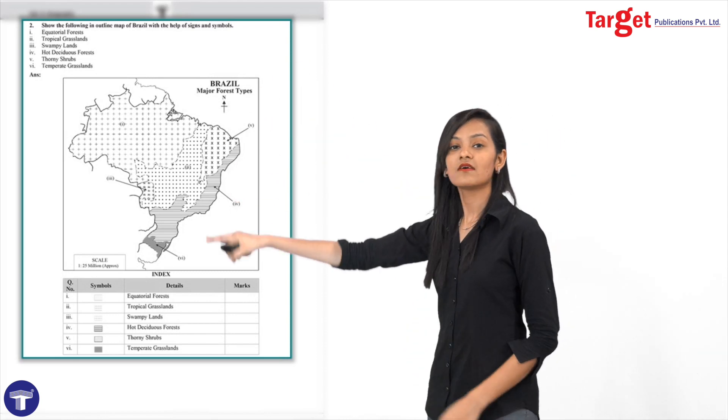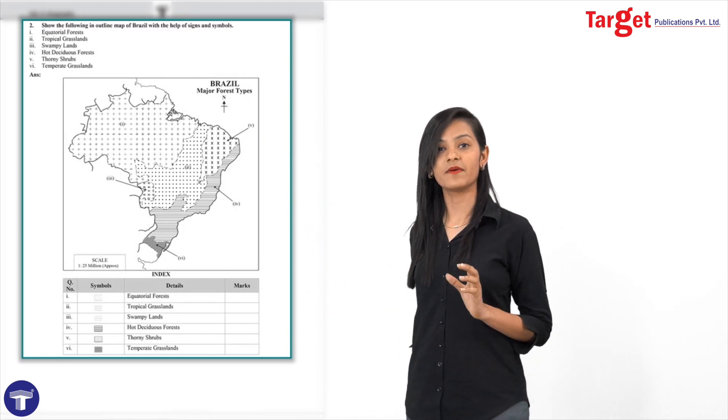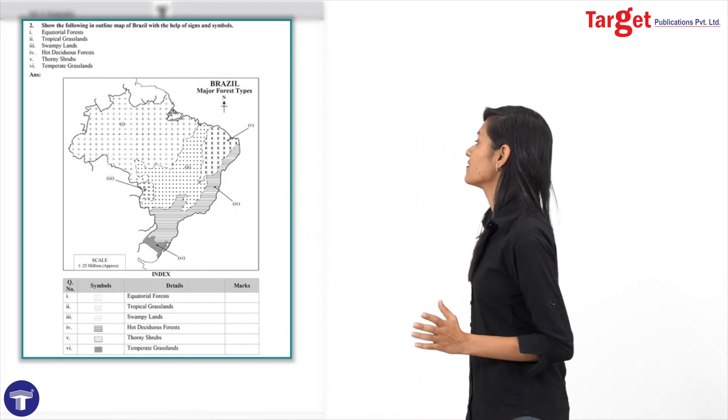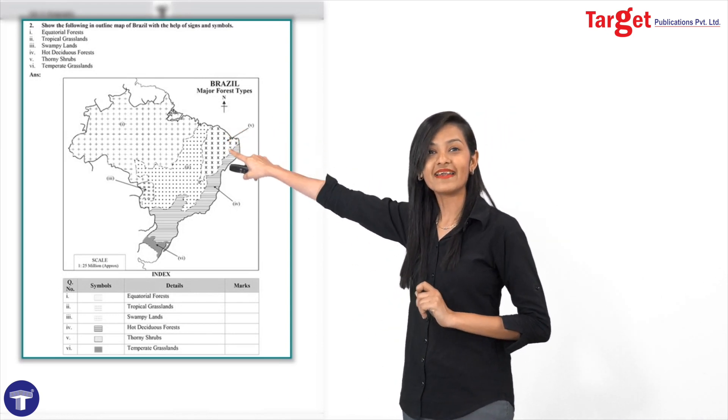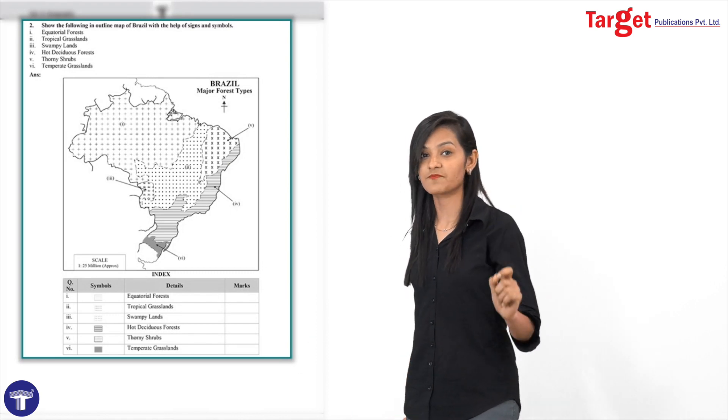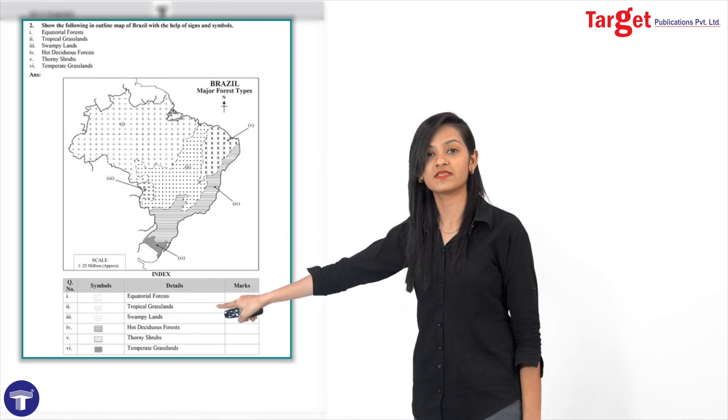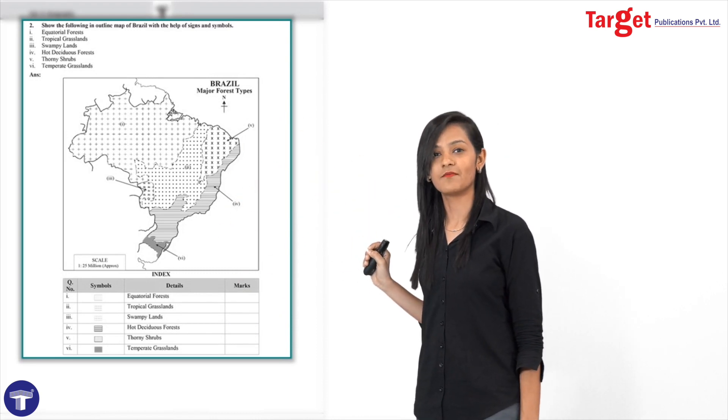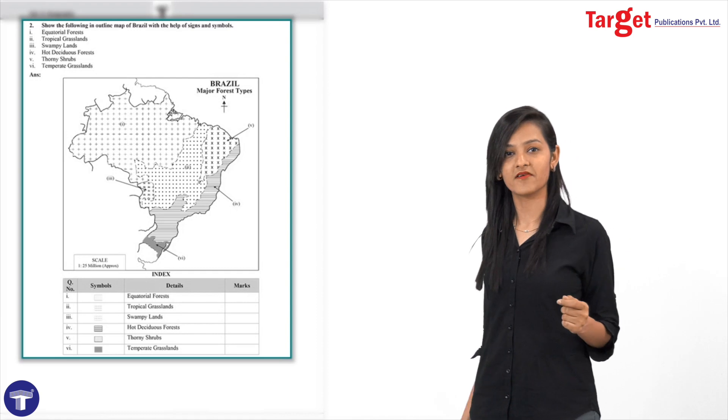It will be an outline map. Here, one thing is, you have to plot on the map and then immediately students, we expect you to go and fill in the index with the appropriate symbol that you've just marked on the map, because this will help you cause minimal errors. Generally, what happens is, you plot on the map, but then you write the index later on, which is the wrong method.